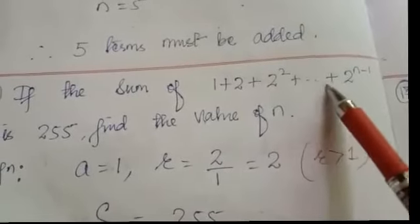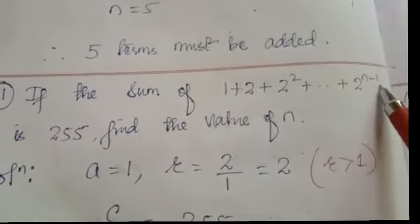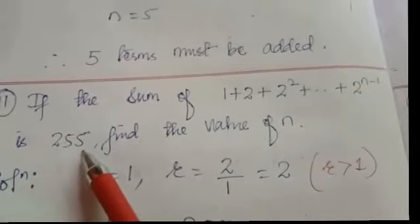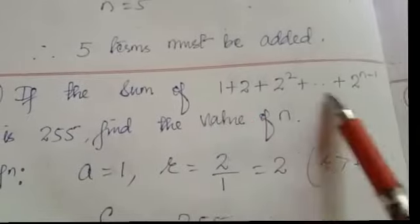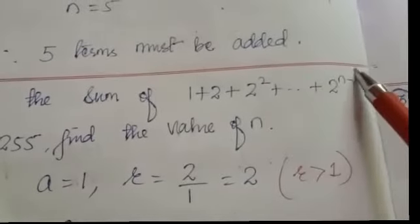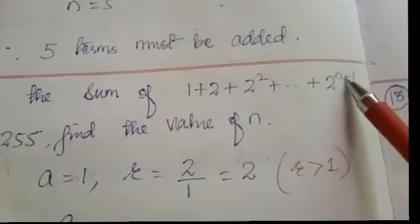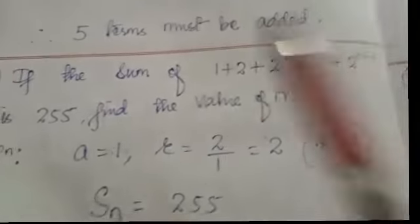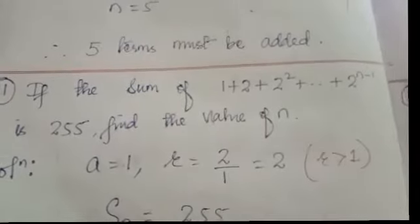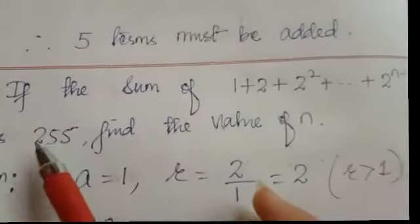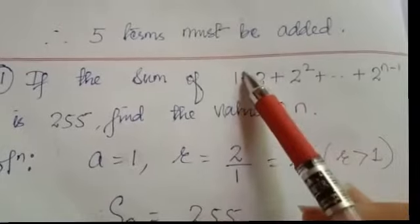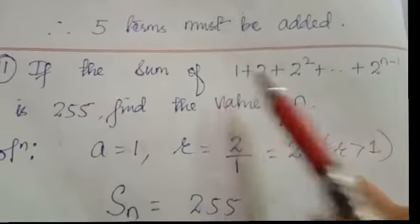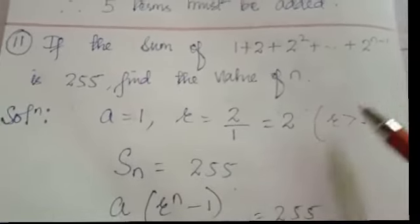Question number 11: if the sum of 1 plus 2 plus 2 squared plus … plus 2 to the power (n minus 1) is 255, find the value of n. This is a GP where the nth term has power n minus 1, so there are n terms. When you add those n terms the answer is 255. Here a equals 1, r equals 2 divided by 1 equals 2. The value of r is greater than 1.